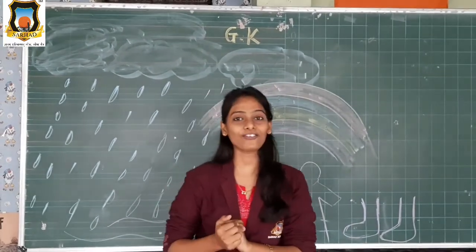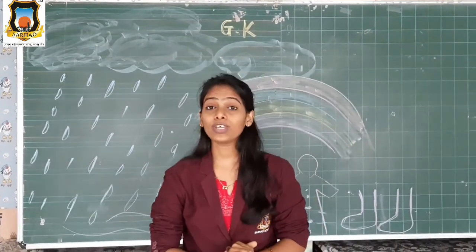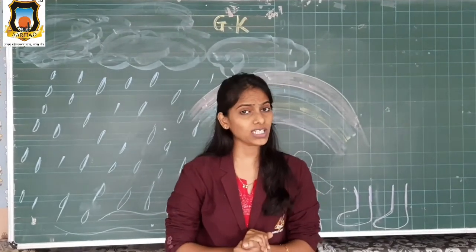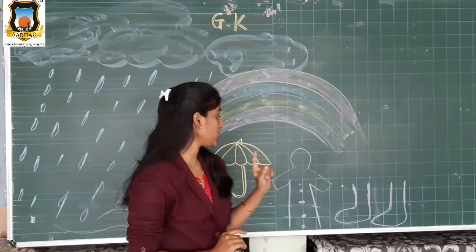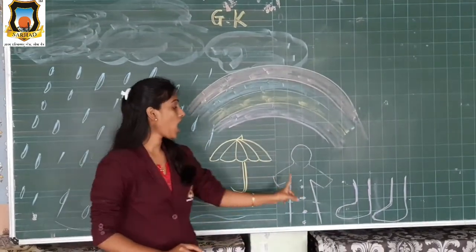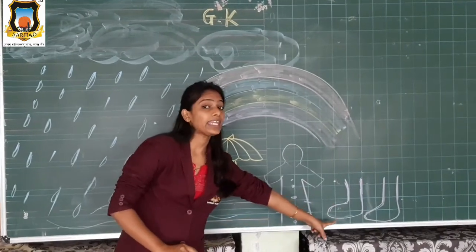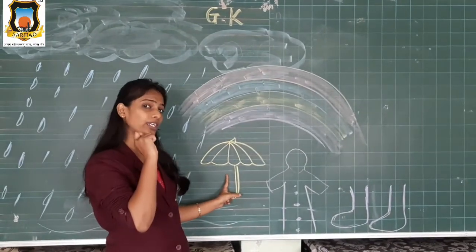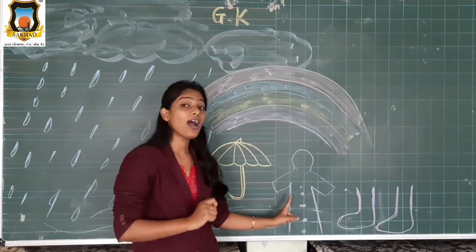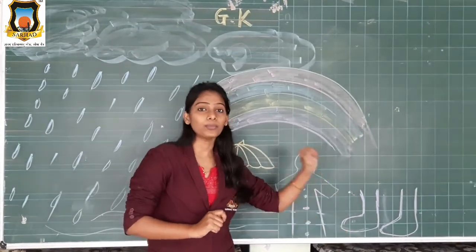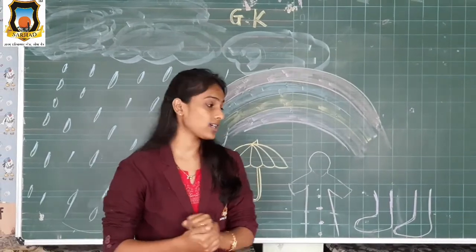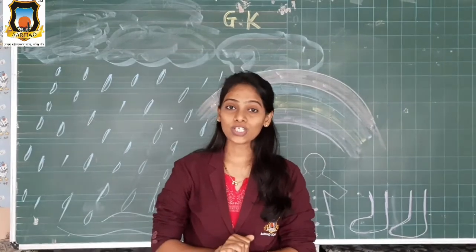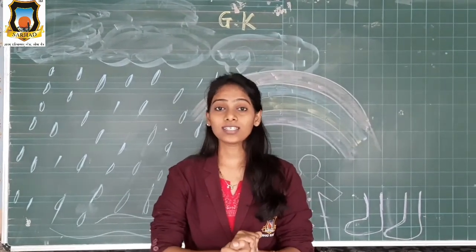Yes, I also love that. But children, what do we need in rainy season? We need an umbrella, raincoat and gumboots. We use umbrella, raincoat and gumboots in rainy season. This is rainy season.